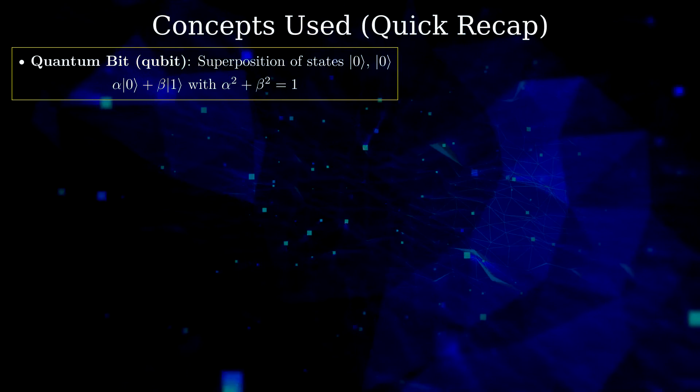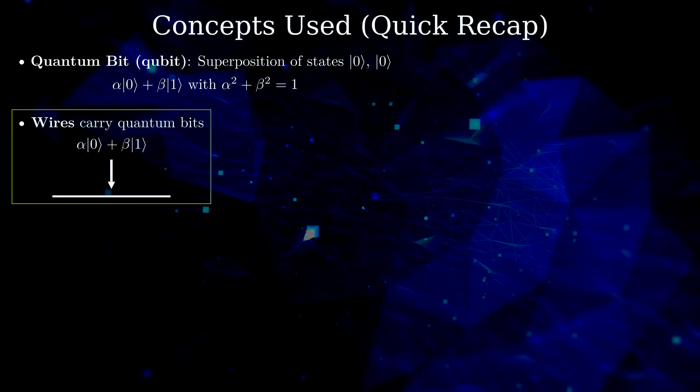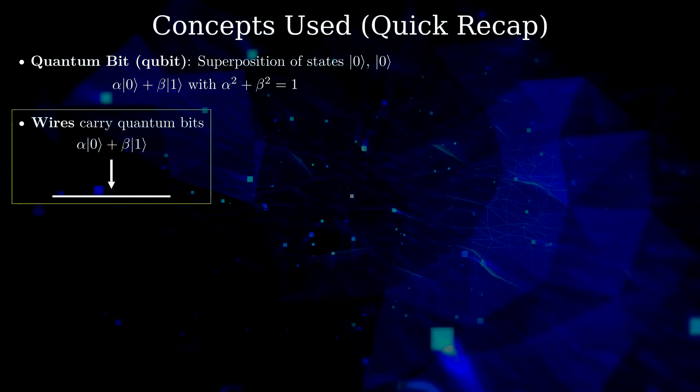When drawing circuits, each wire carries a single quantum bit. We combine wires and quantum bits by using the tensor product.